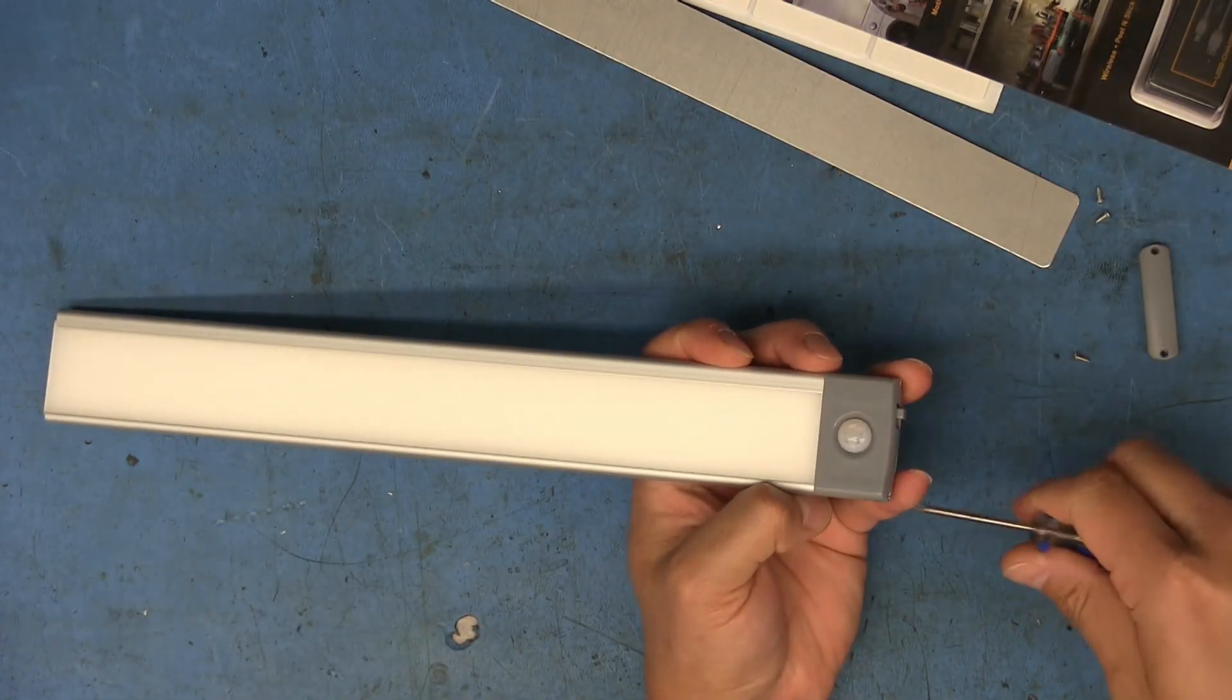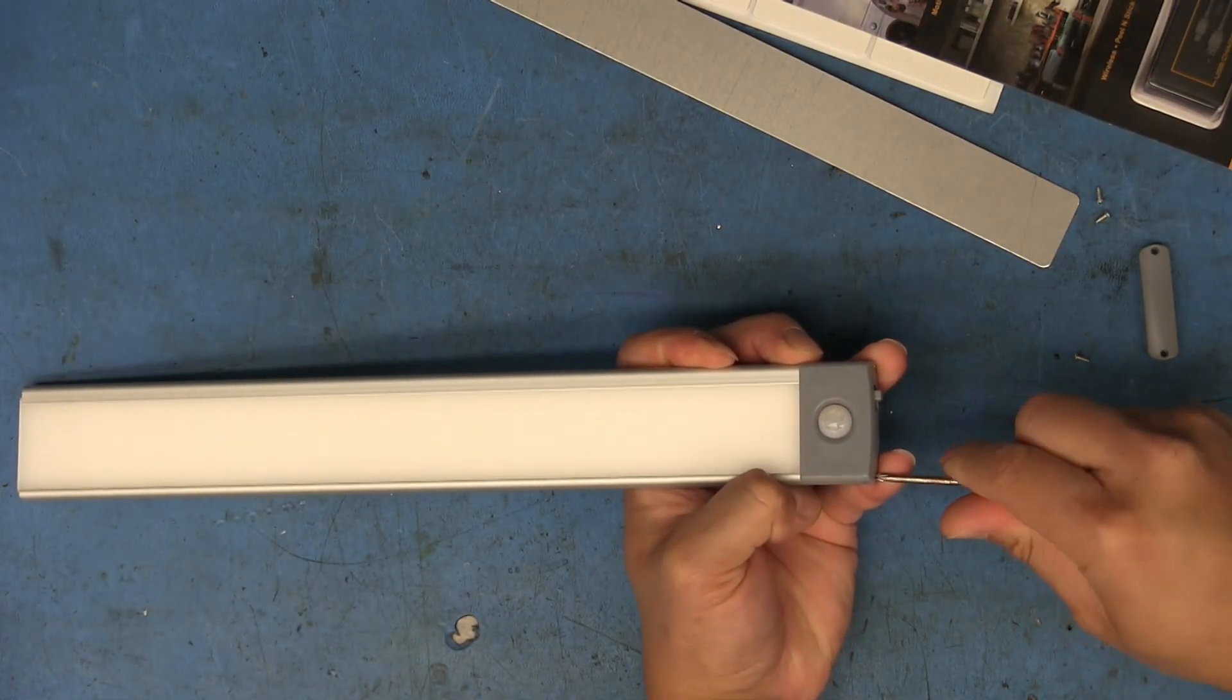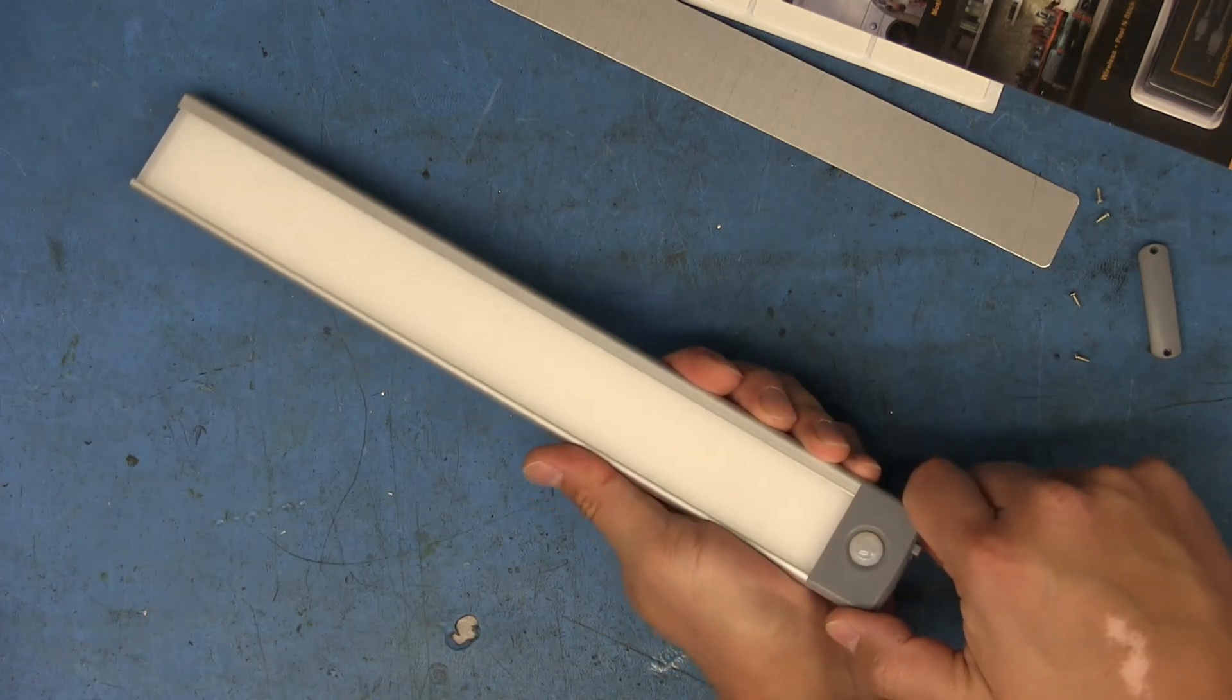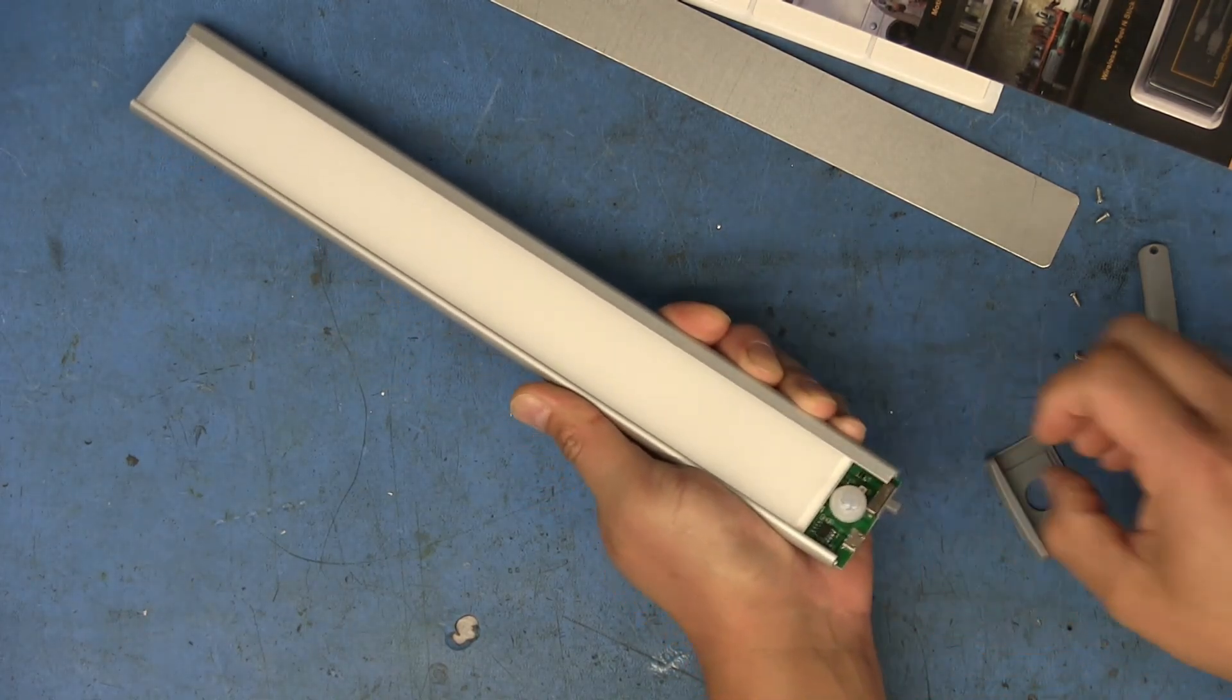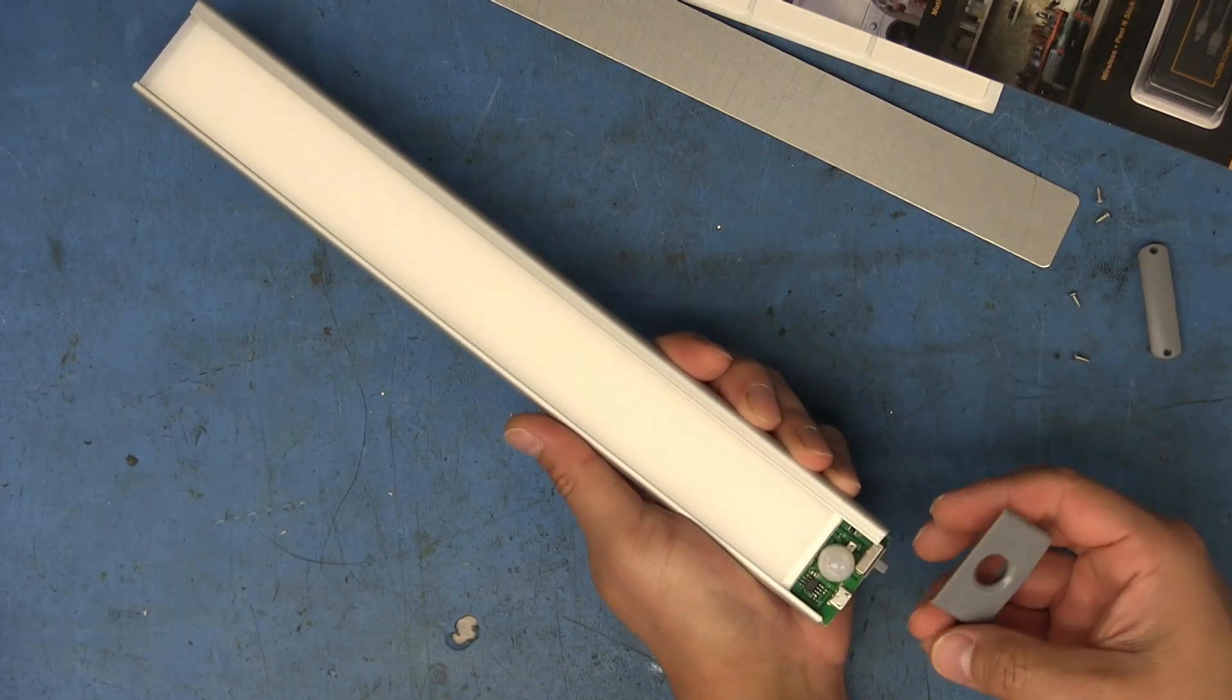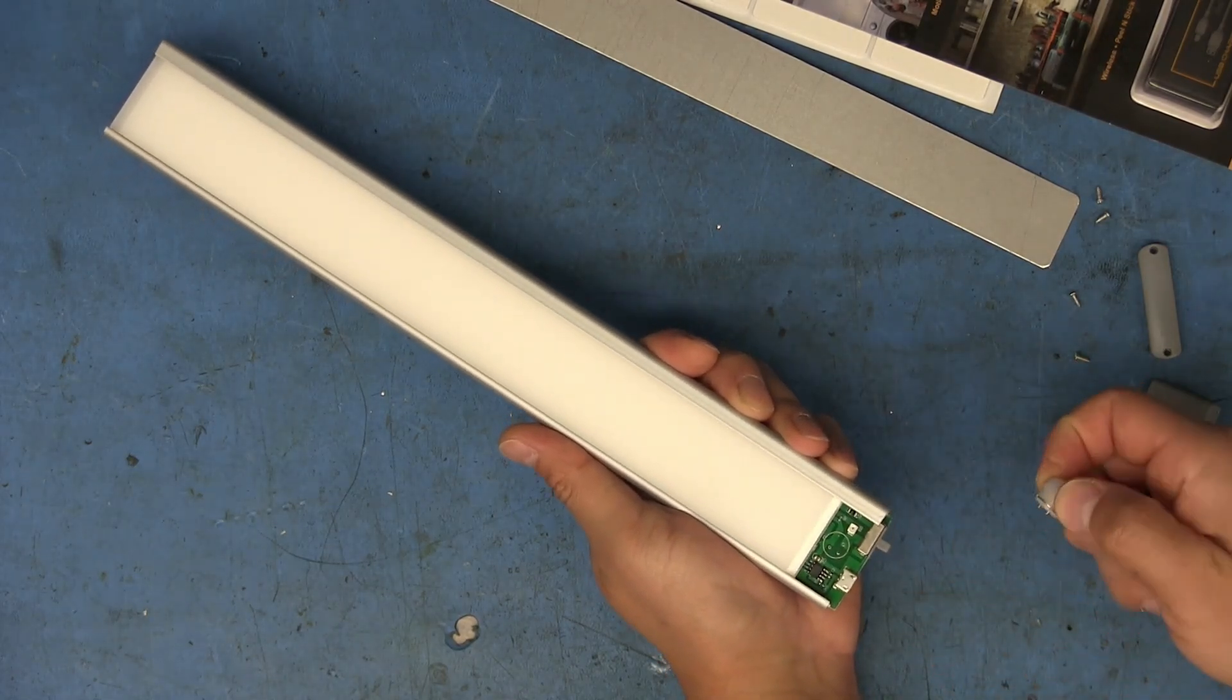So I think once we remove this side here, we should be able to pull the entire thing out. Yeah, that doesn't seem to want to release. Okay, just pulled up on it basically. So there it is. There's the motion sensor.